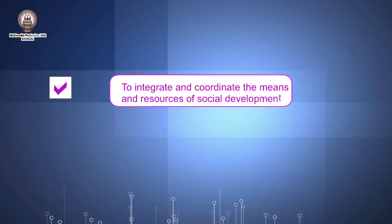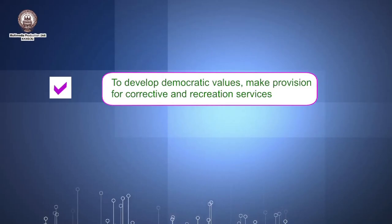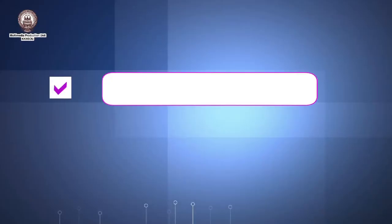To integrate and coordinate the means and resources of social development. There are many resources in the society but they need to be properly linked and coordinated for addressing social as well as individual issues. To develop democratic values and make provisions for corrective and recreational services. Democratic values, as stated in the constitution of India, are followed by social work as a profession and it is the objective of social work to ensure these values contribute to individual development. To bring change in the social system — a social system weighed down by certain traditional values or irrational beliefs needs to be fought against, and the role of the social worker is to bring about that change.